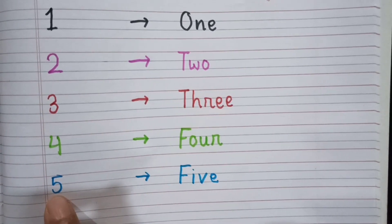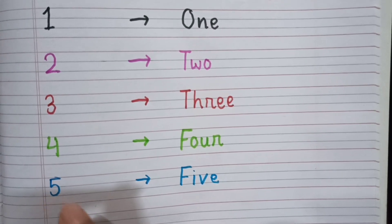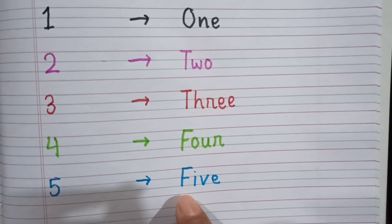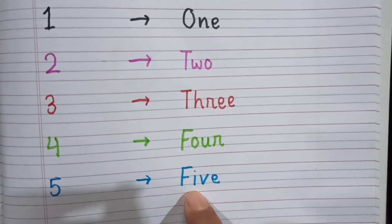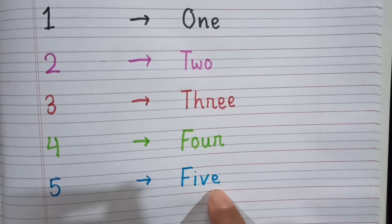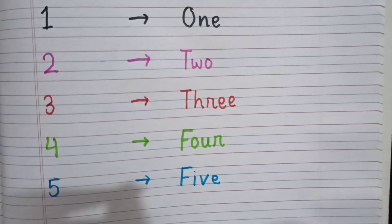After four, the next number is five. This is five, and the spelling of five is F-I-V-E. Five. Thank you, kids!